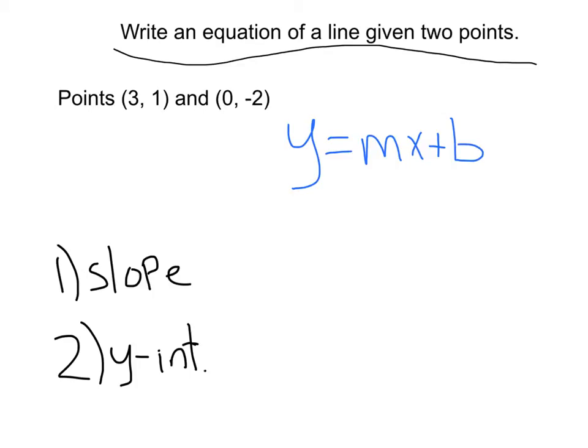All right, the last example ever in life on this specific video. Okay. Write an equation of a line given two points. So this time we know the line's passing through these two points, three, one, and zero, negative two. We've got our y equals mx plus b. We want to find our slope and y-intercept. This time we have neither of these. So this is what you've got to do when you have two points.